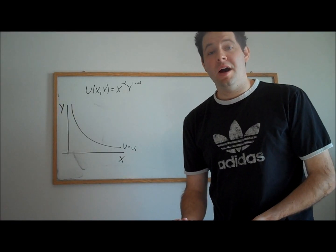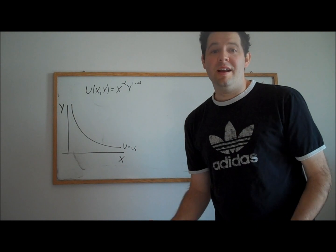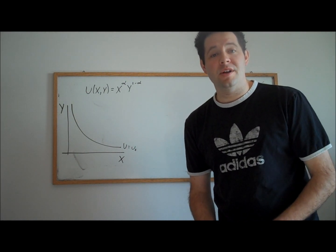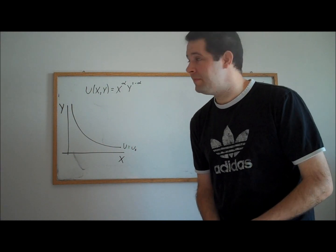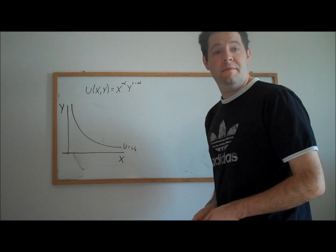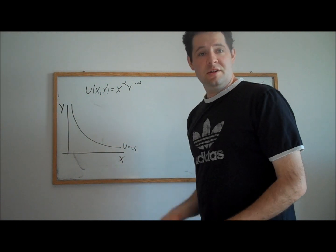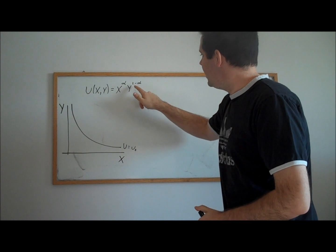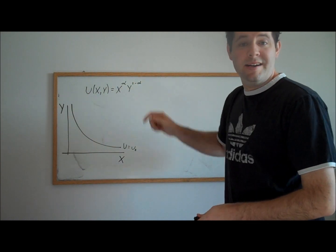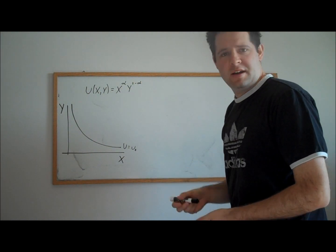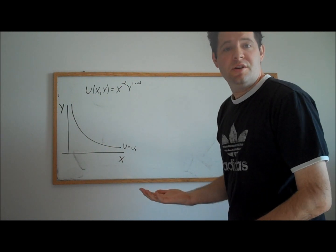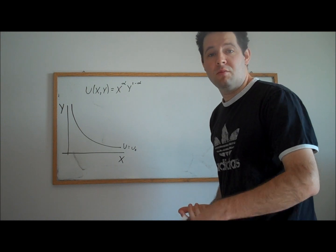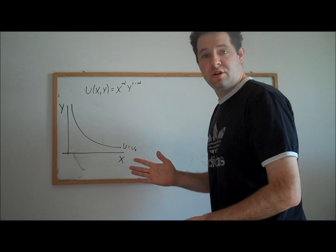In this video, I introduce the Cobb-Douglas utility function and show some useful properties that demonstrate why we use it so frequently. Here is a Cobb-Douglas utility function. It takes bundles of x and y, x to the alpha power, and y to the 1 minus alpha power. Here alpha is some number between 0 and 1 — think of it as a share. Later on, we'll show why.